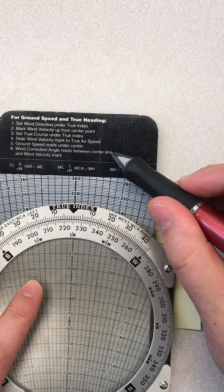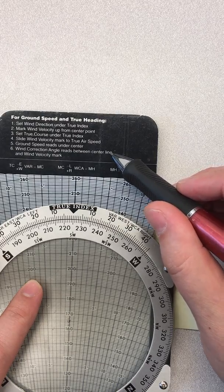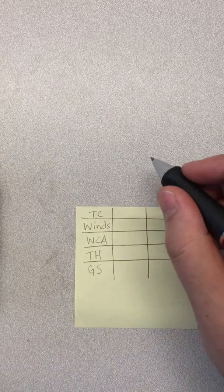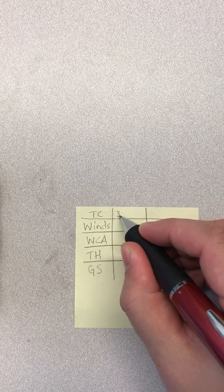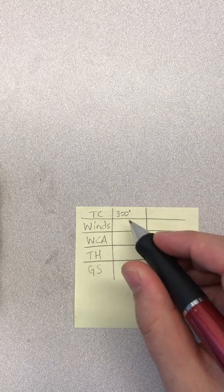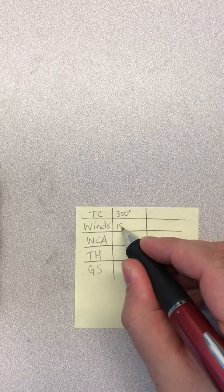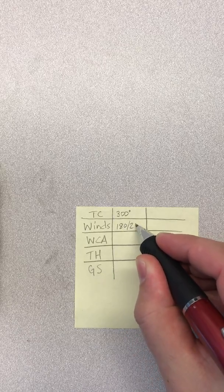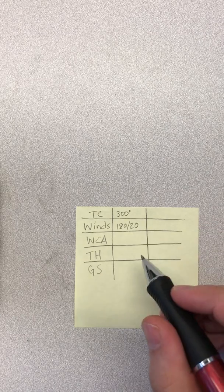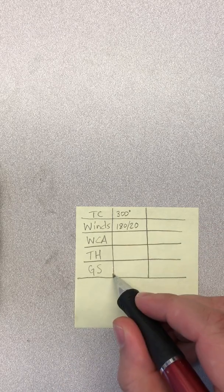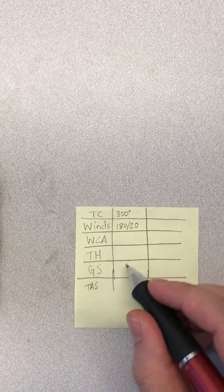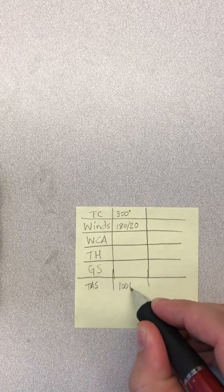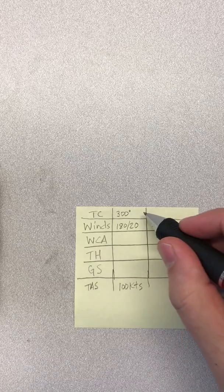I've got just some examples here and we're going to run some numbers to show you step by step how to do it. The instructions are listed at the top of most of these E6B flight computers. For our first true course, let's say true course 300. We're going to say the winds are out of 180 at 20 knots, and a true airspeed is also going to be required, so let's say 100 knots.